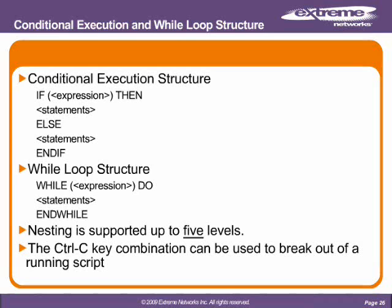The while loop structure is: while something is true, do the statements embedded in the while. While, encapsulated in parentheses, while that expression is true, do the functions. Nesting is supported up to five levels. Nesting is when you have, for example, a while loop, and inside it an if structure, inside that another while loop, inside that another if or while — you're allowed to go five deep in the Extreme EXOS operating system. You can use Control+C to break out of any running script.